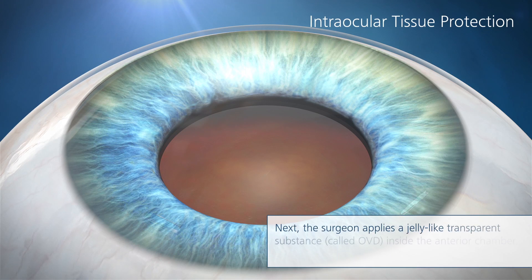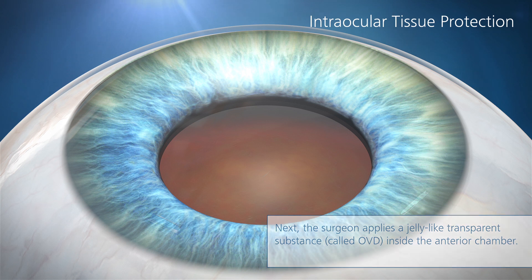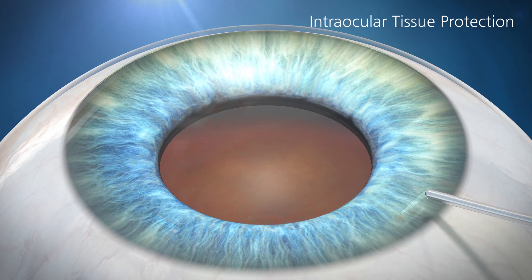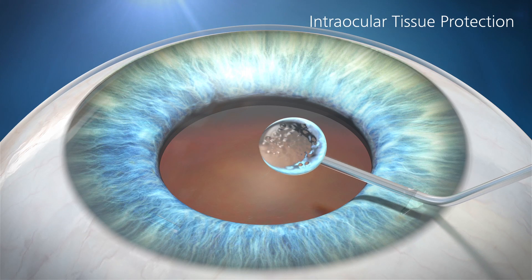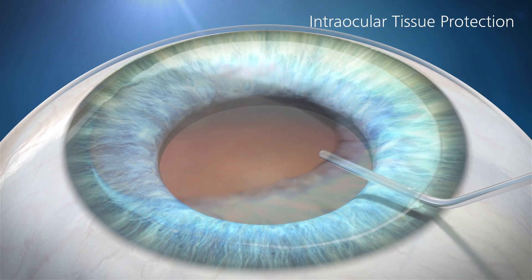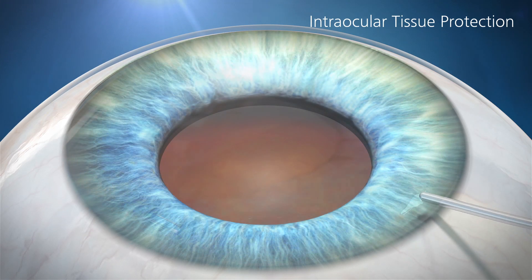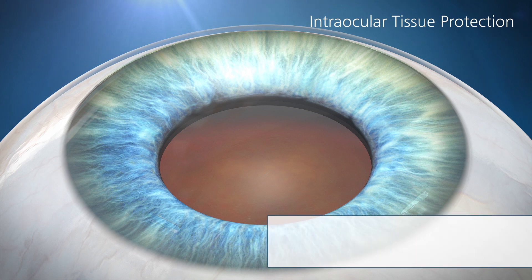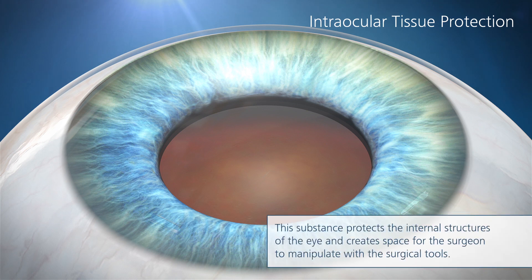Next, the surgeon applies a jelly-like transparent substance called Ophthalmic Viscosurgical Device, OVD, inside the interior chamber. This substance protects the internal structures of the eye and creates space for the surgeon to manipulate with the surgical tools.